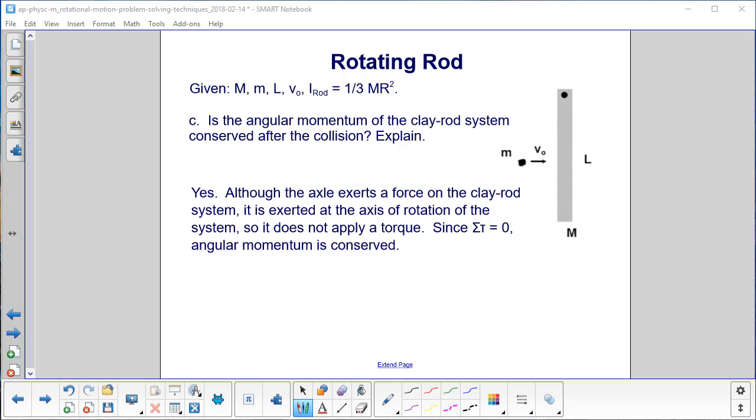Is the angular momentum of the clay-rod system conserved? Well, don't get confused. Don't say, well, here's a force, so no, it can't be conserved. But what is this rod rotating about? This axle right here. So you have a force applied to the axle. So your line of action to your axis of rotation there. Your line of action is equal to zero, the magnitude, so there is no torque. Whenever you exert a force at your axis of rotation, it provides no torque. So since the sum of the torques is equal to zero, angular momentum is conserved.